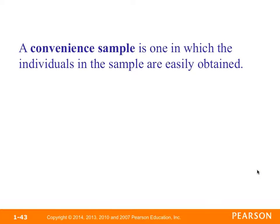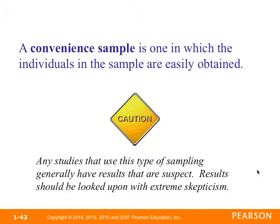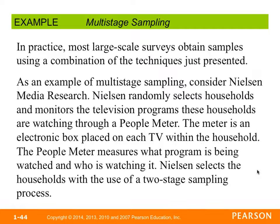A convenience sample is one in which individuals are easily obtained. Any studies using this type of sampling generally have suspect results that should be viewed with extreme skepticism. Things like newspaper surveys, magazine surveys, or someone standing outside a mall taking a survey are convenient but not very accurate. In practice, most large-scale surveys use a combination of these techniques, which is considered multi-stage sampling.